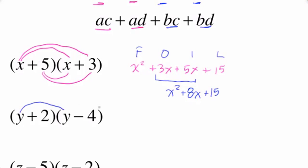Let's take a look at this next one. Again, F is Y times Y, which is Y squared. O, outside, Y times negative 4, negative 4Y. And then I, inside, is a positive 2Y. Notice that I'm being very deliberate about writing the signs. And then last, L, is a positive 2 times negative 4, which is a negative 8.